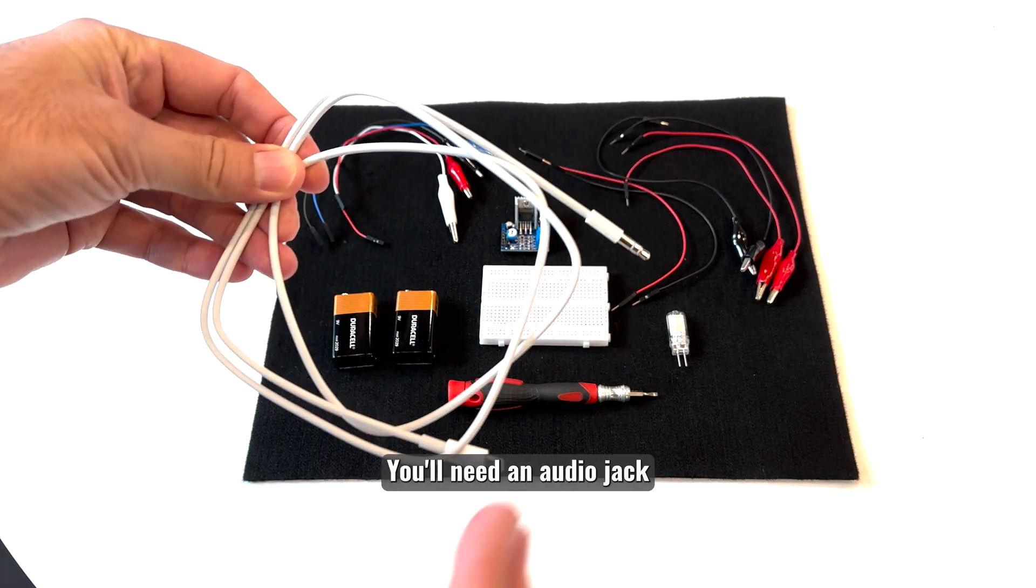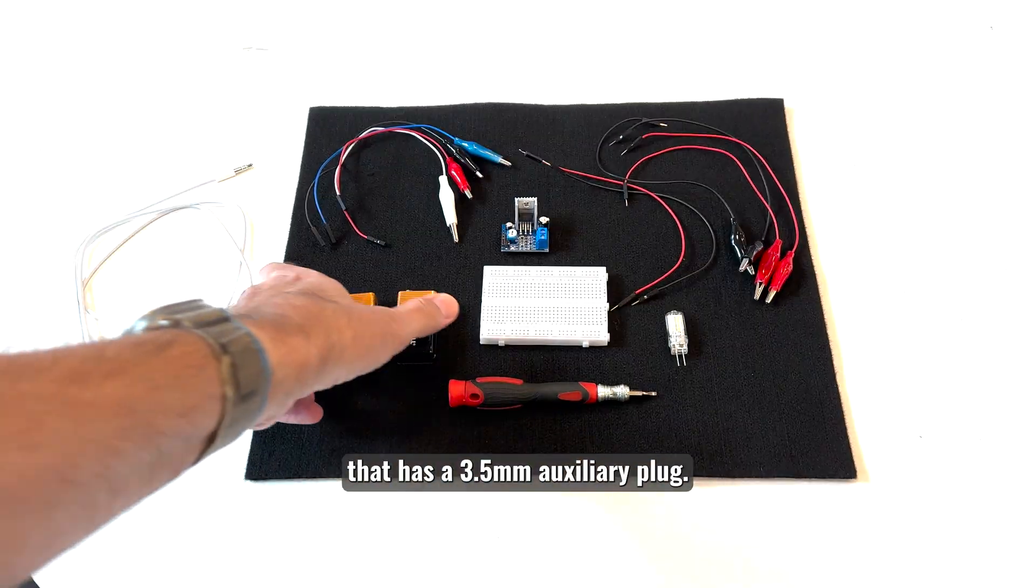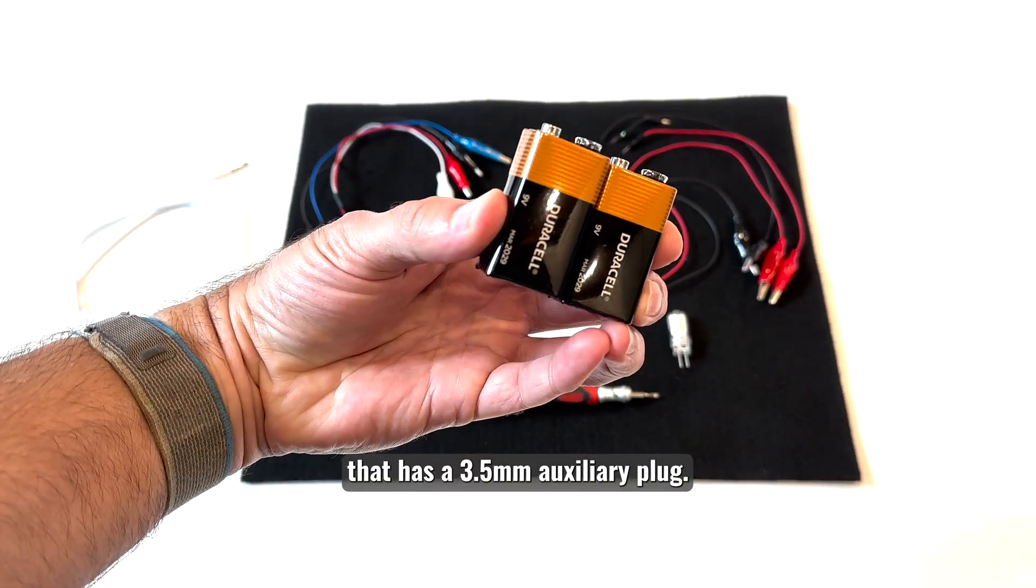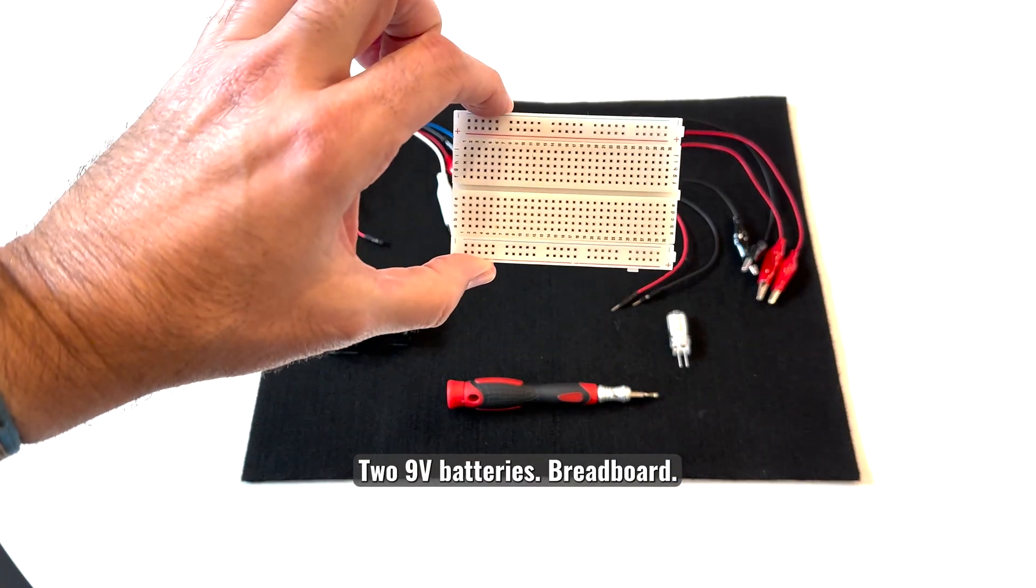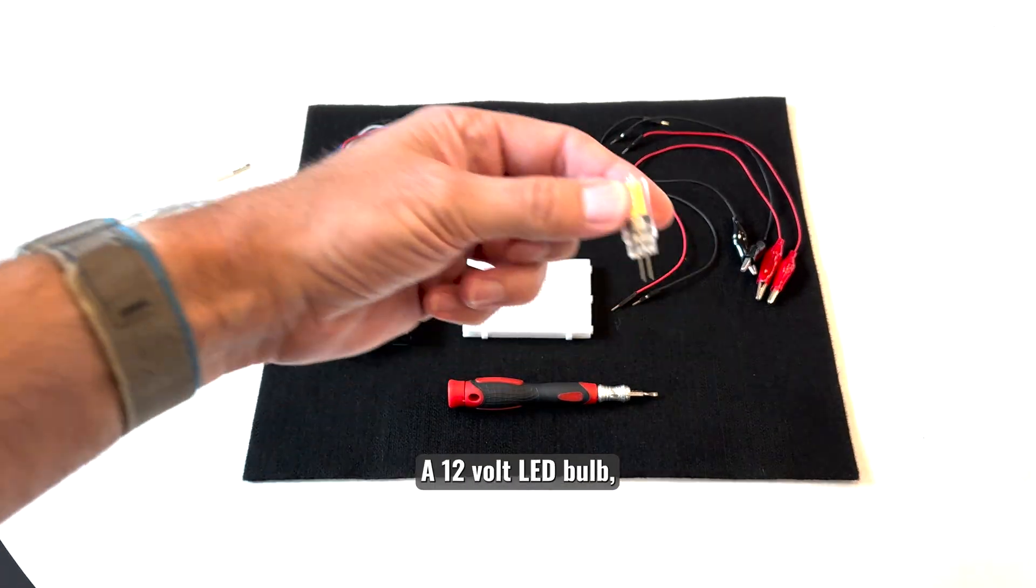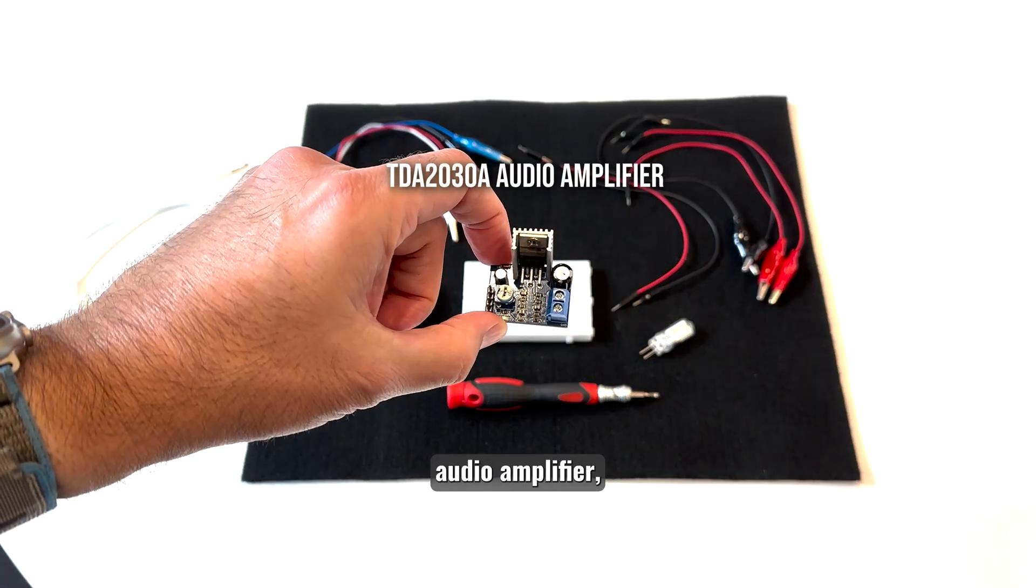You'll need an audio jack that connects to your phone or device that has a 3.5mm auxiliary plug, two 9V batteries, a breadboard, a 12V LED bulb, an audio amplifier, and various jumper wires.